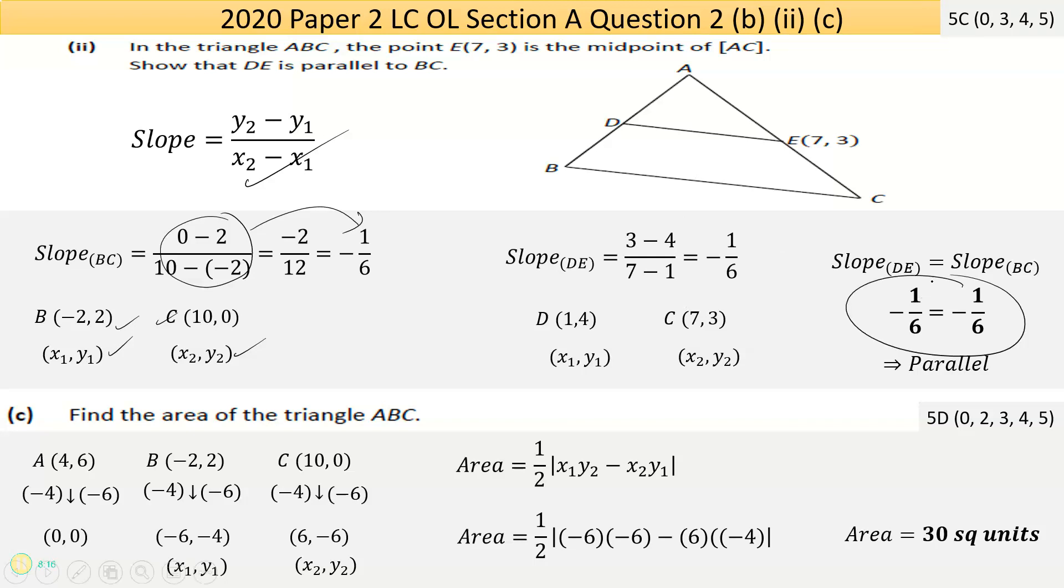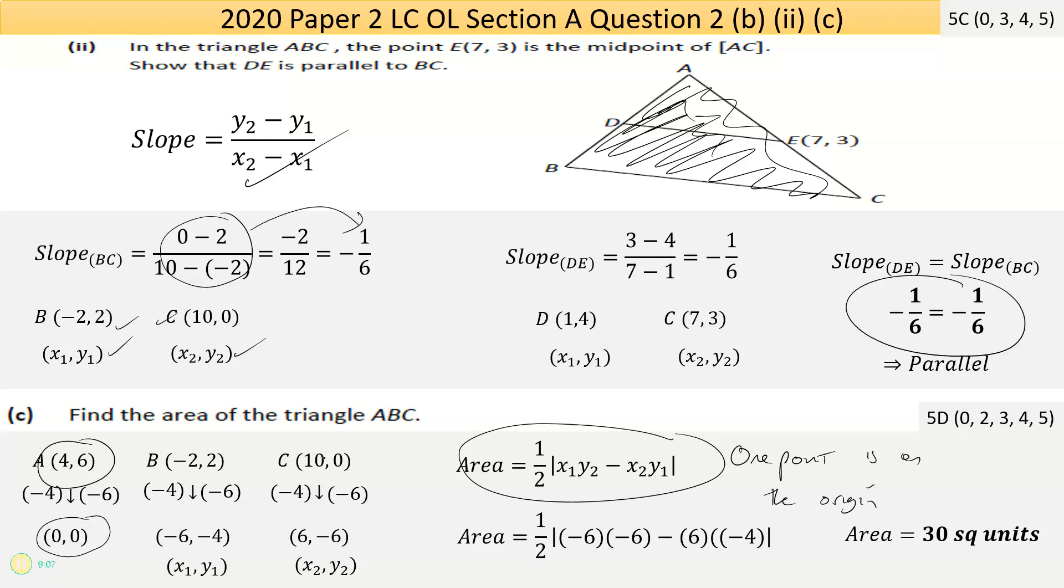The last part, part C, says find the area of the triangle ABC. There's different ways of doing that, but if it is in coordinate geometry, there is this area formula. But it only works when one point is on the origin. None of these points A, B, or C are on the origin. So we have to move one to the origin.